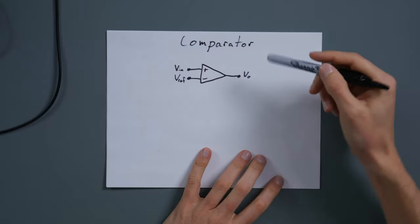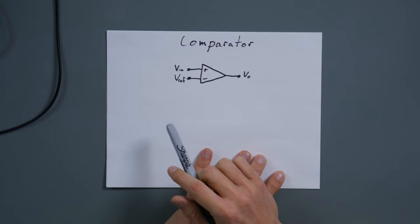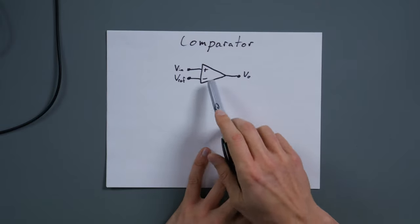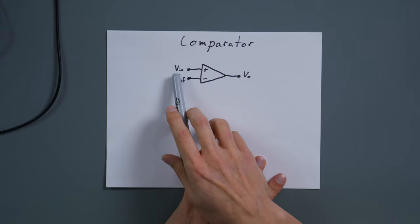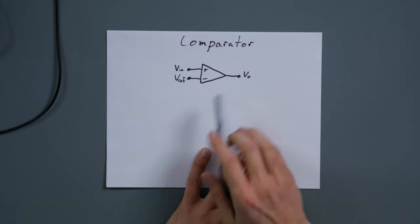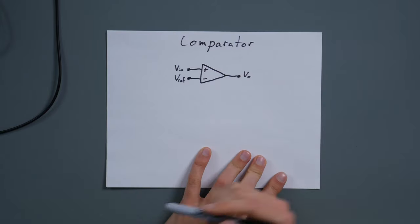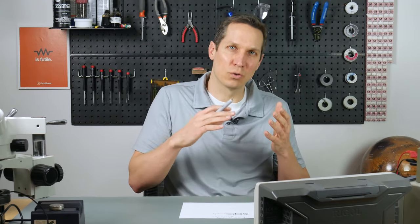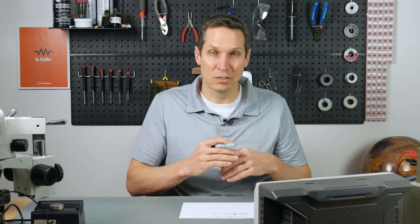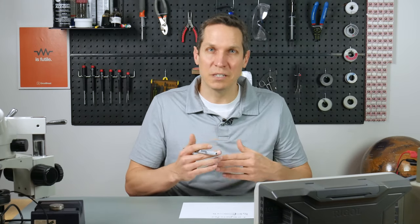It's a very, very simple circuit: you have the op amp, you have a reference voltage, then you have your input voltage, and you have an output voltage. As you notice, there is no feedback — there is no way for the output to control the input. With an ideal op amp, your output has basically zero impedance or an infinite gain.